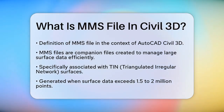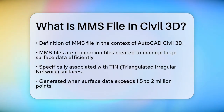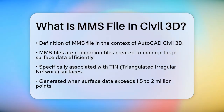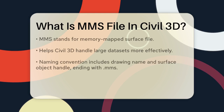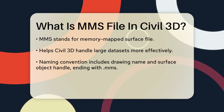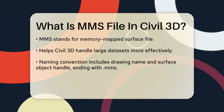When you work with large surfaces in Civil 3D, the software creates additional files to manage the data efficiently. An MMS file is one of these companion files, specifically associated with TIN — triangulated irregular network — surfaces. If your surface has more than 1.5 to 2 million points, Civil 3D generates an MMS file.